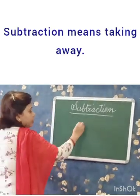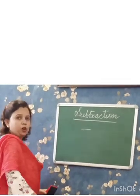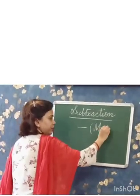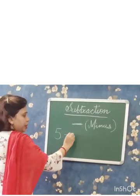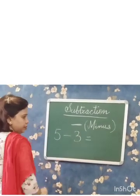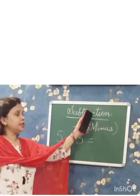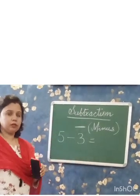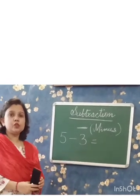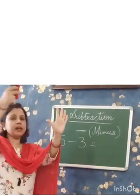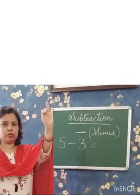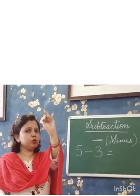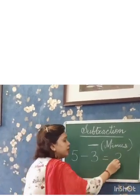This sign is called the minus sign. Like if I write 5 minus 3 — this minus sign is the sign of subtraction. So from 5 we will take away 3: 1, 2, 3. We take out. How many are left? 1, 2. So the answer is 2.